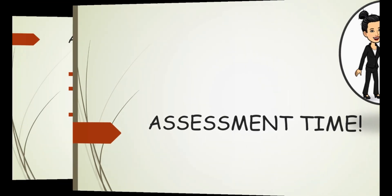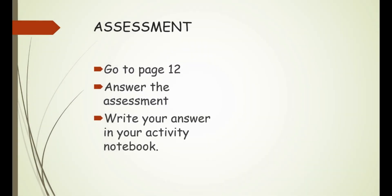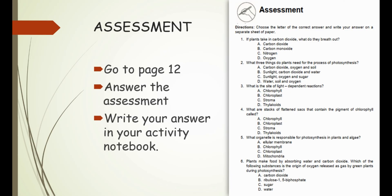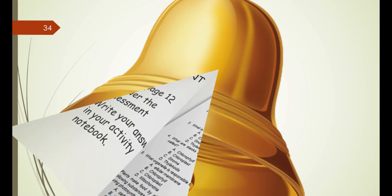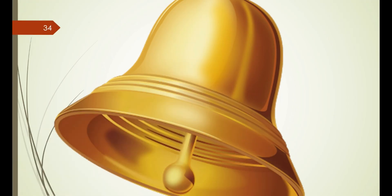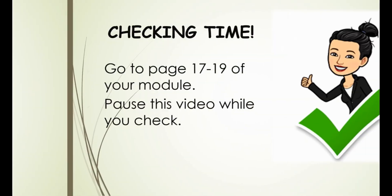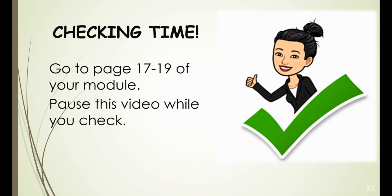It's assessment time. Go to page 12 and answer the assessment. Choose the letter of the correct answer and write your answers in your activity notebook. Are you ready? Let's go! Were you able to answer all the items in the assessment? Great, let's see how you did. Go to pages 17 to 19 of your module and pause this video while you check your work. Did you get a perfect score? Awesome! Almost perfect? That's alright — let's do better next time.